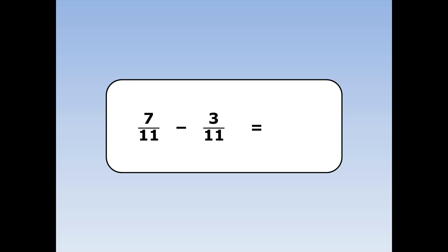7 elevenths take away 3 elevenths. We take away the numbers on the top and the number on the bottom stays the same. 7 take away 3 is 4, and the 11 stays the same.